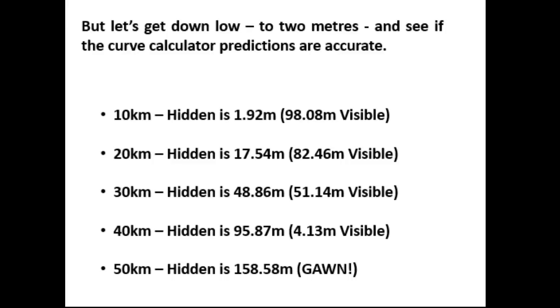So the 10 kilometre column should have a hidden value of 2 metres. 20 kilometres away, 17 and a half. 30km is almost half of it gone. 40km it's almost all gone. And at 50km the hidden amount is far greater than the 100 metre height of the column, so it is gone.